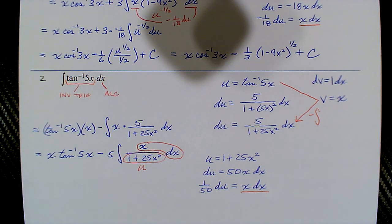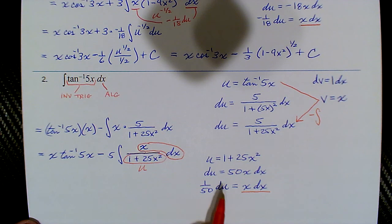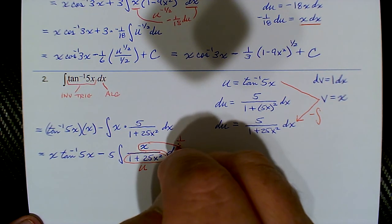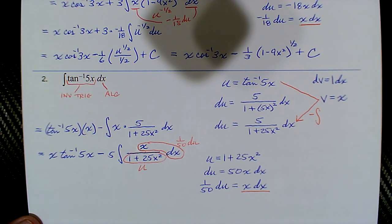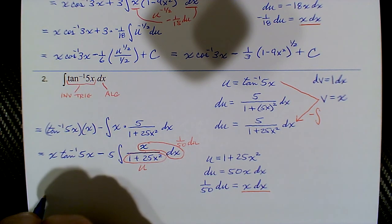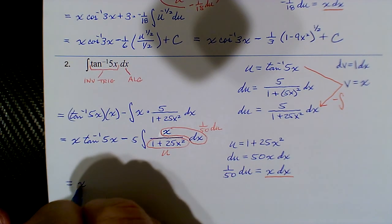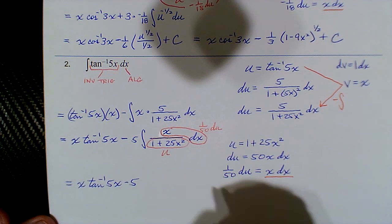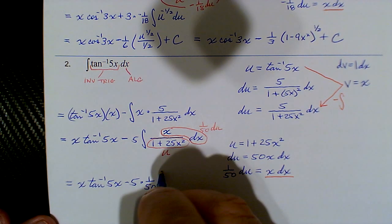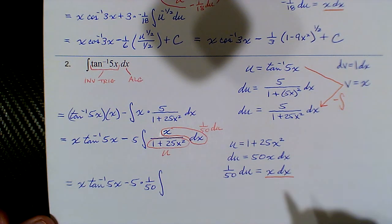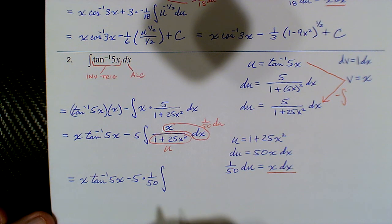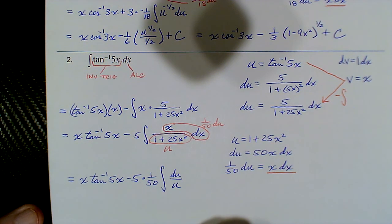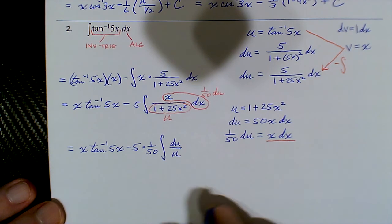We recopy the first term — that's part of the solution. The minus 5 is now joined by the 1/50, and we have the integral of du/u. We integrate: 5 times 1/50 reduces to 1/10, so minus 1/10, and du/u integrates to the natural log of the absolute value of u. We add our constant at that point.